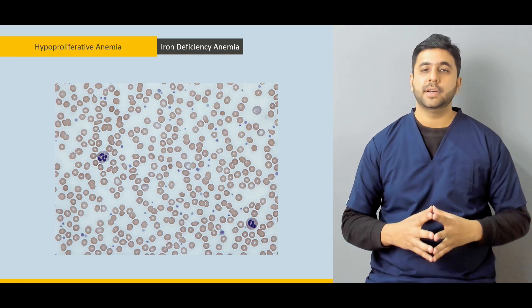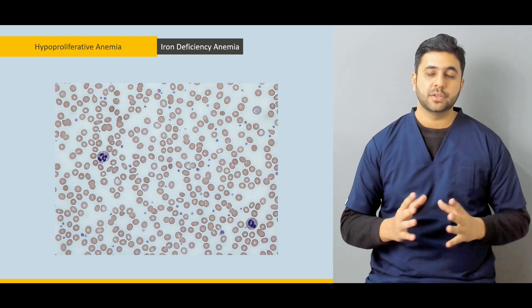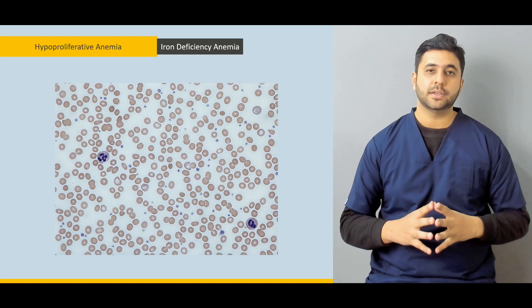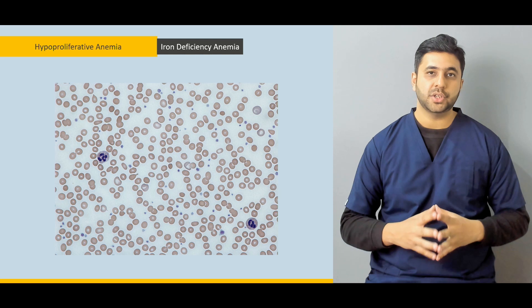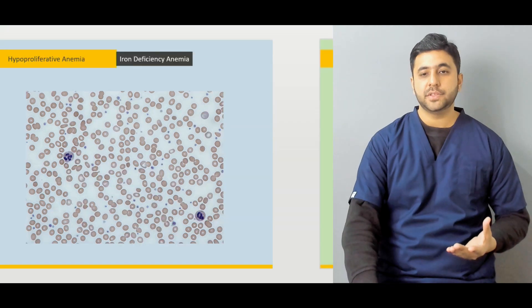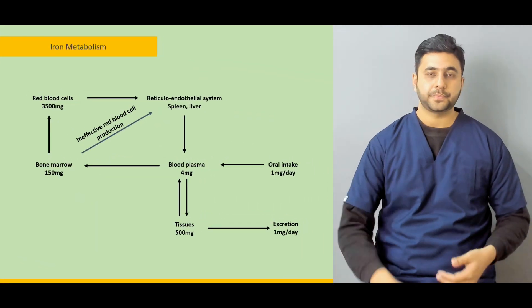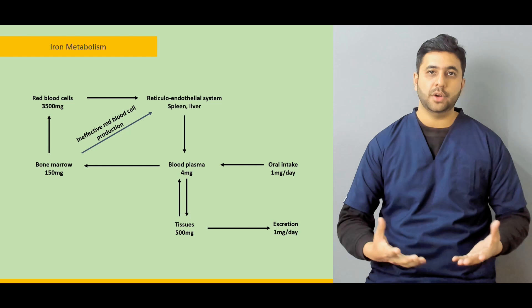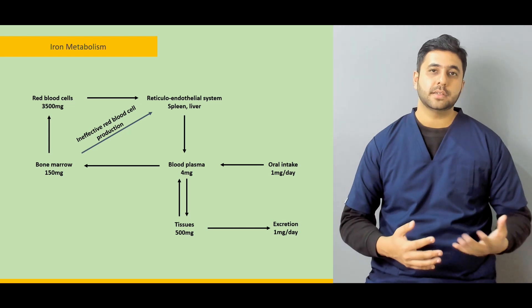Among them, the most common one is iron deficiency anemia. This is the basic topic of discussion in the hyperproliferative anemia discussion, and we are going to discuss iron deficiency anemia in great length. To start off, we have to revise the basics.